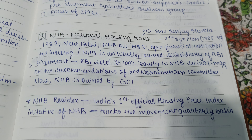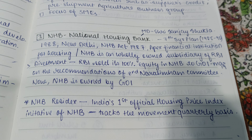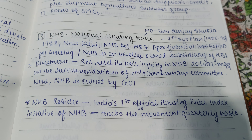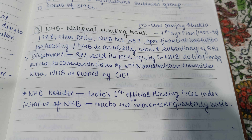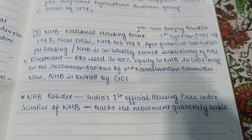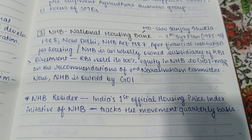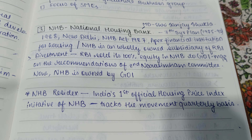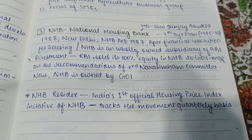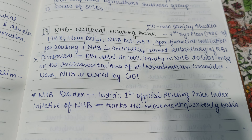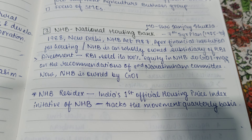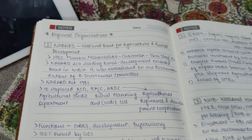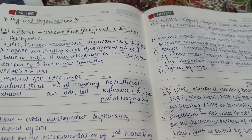NABARD and EXIM have their headquarters in Mumbai, while NHB has its headquarters in New Delhi. The NHB Act is 1987. NHB is the apex financial institution for housing. NHB was a wholly owned subsidiary of RBI, but RBI sold its 100% equity in NHB to the Government of India by March 2019, on the recommendation of the Second Narasimham Committee. Now NHB is owned by the Government of India. Importantly, NHB RESIDEX is India's first official housing price index, an initiative of NHB that tracks price movement on a quarterly basis.